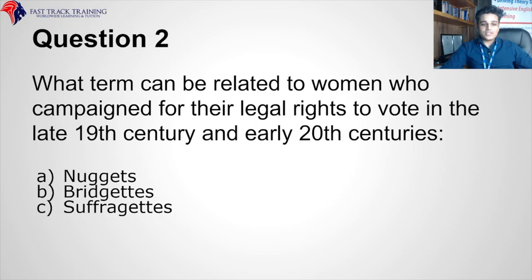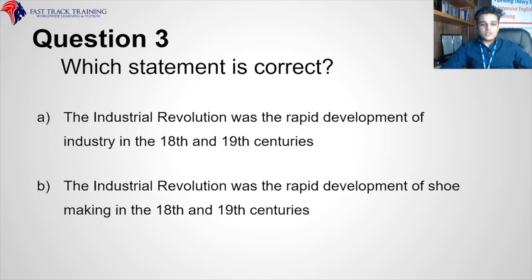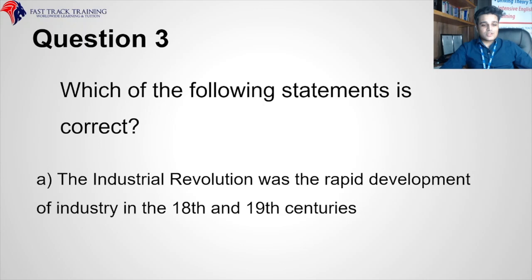Which statement is correct? The Industrial Revolution was the rapid development of industry in the 18th and 19th century, or the rapid development of shoemaking? The correct answer is the Industrial Revolution was the rapid development of industry in the 18th and 19th century.